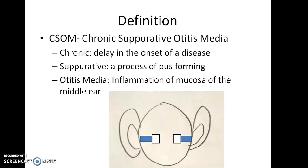What is CSOM? 'Chronic' refers to anything which is delayed in the onset of the disease — the manifestation of symptoms is delayed. 'Suppurative' means a process of pus forming. 'Infection' is the entry of a foreign pathogenic agent into the body. The defense system against that is called immunity, and the result is called inflammation.